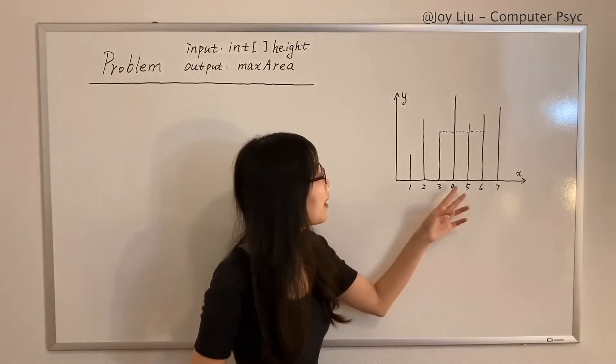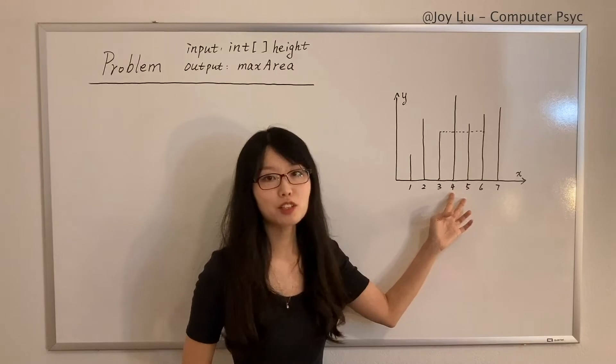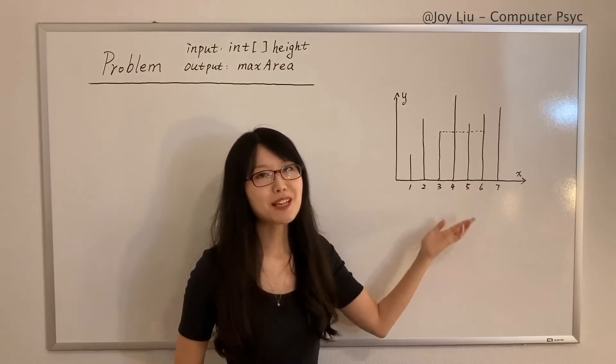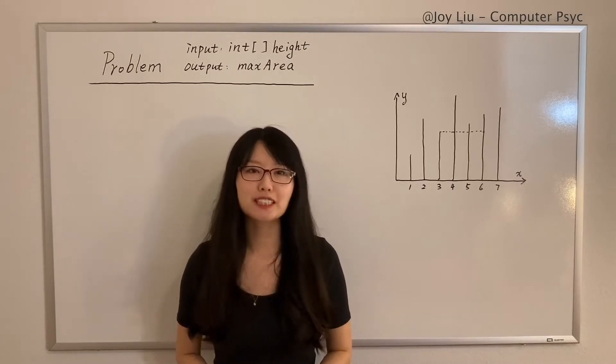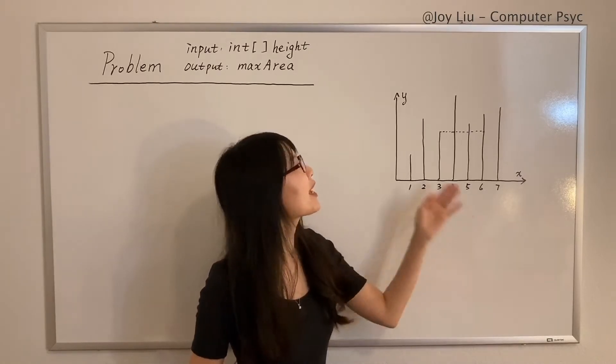Also, in this problem we don't consider blocking. For example, the lines inside the container don't block the water. It could be an interesting question as well, but just don't worry about it. You just need to find the largest area.